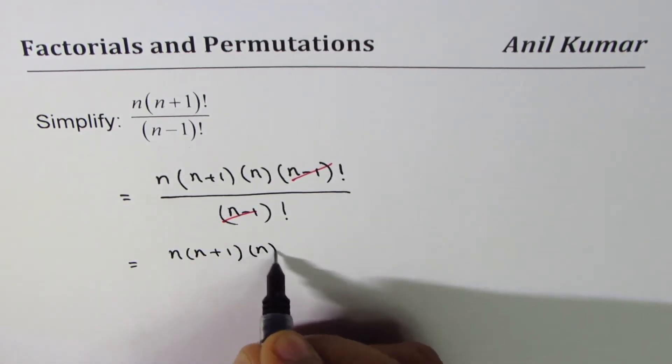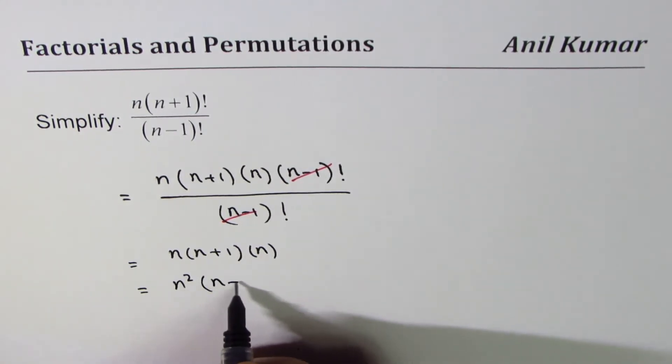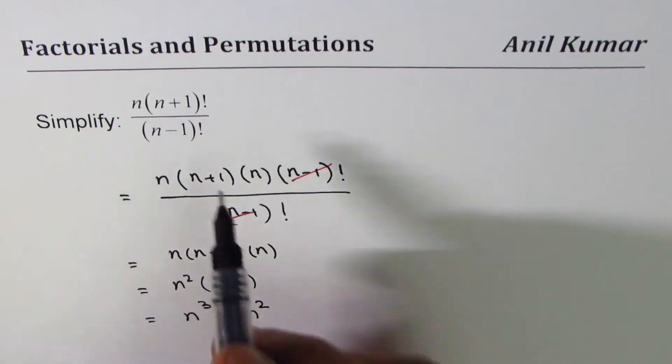Which is n² times (n+1), or n³ plus n². So this expression can be written as n³ plus n². That is how you can simplify.